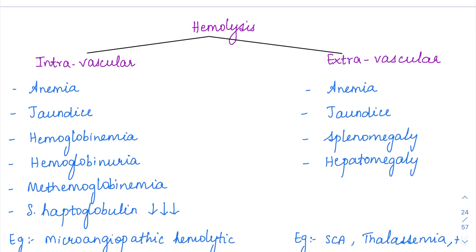The hemolysis can further be divided into intravascular or extravascular hemolysis, based on whether the RBC lysis is taking place inside the vessel or in the spleen. Intravascular hemolysis takes place inside the blood vessel, while for extravascular hemolysis the lysis takes place in the spleen — somewhere outside the vessel.